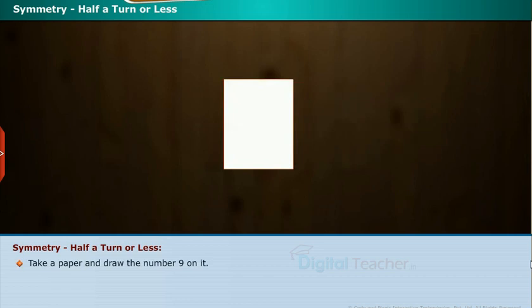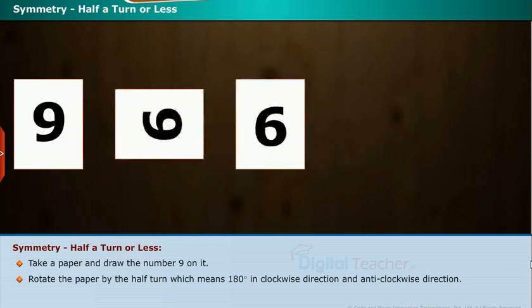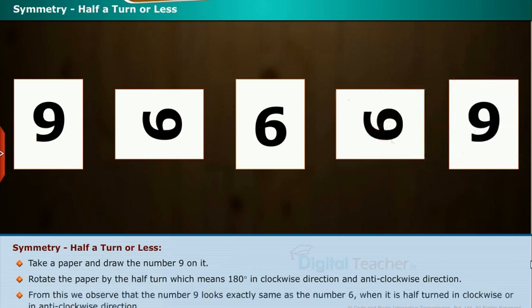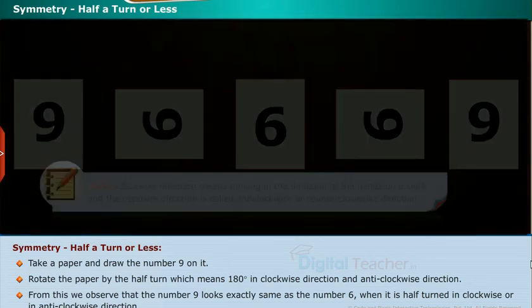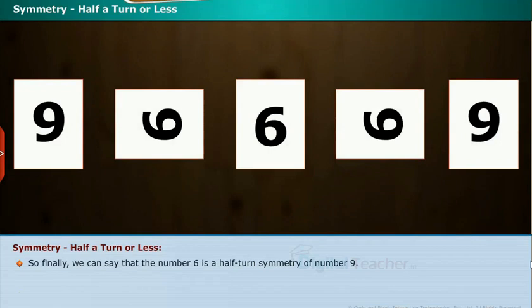Take a paper and draw the number 9 on it. Rotate the paper by half a turn — that is 180 degrees — in the clockwise and anticlockwise directions. We observe that the number 9 looks exactly the same as the number 6 when half-turned. Clockwise direction means moving in the direction of the hands on a clock; the opposite is called anticlockwise or counterclockwise. So the number 6 is the half-turn symmetry of the number 9.